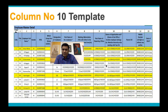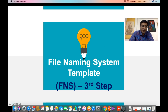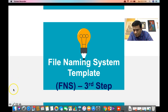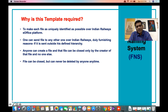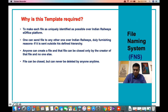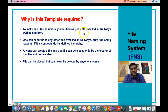Once the Employee Master Database is gathered and ready, the next most important template to prepare is the File Naming System Template. The File Naming System is the way NIC has designed to make files accessible on the eOffice platform, so you can access files effortlessly. Searching for eFiles will be very easy, and missing or misplacing of files will never occur on the eOffice platform.